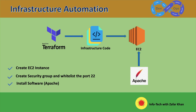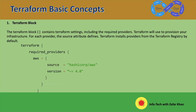Let's discuss now some basic concepts of Terraform. The first one is the Terraform block. The Terraform block contains Terraform settings including the required providers Terraform will use to provision your infrastructure. For each provider, the source attribute defines where Terraform installs the provider from — the Terraform registry by default. Here I am using AWS as a provider. In this configuration the AWS provider source is defined as hashicorp/aws, which is shorthand for registry.terraform.io. You can also set a version constraint for each provider defined in the required providers block.